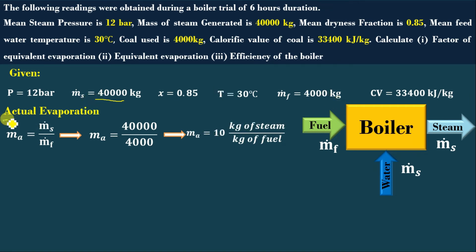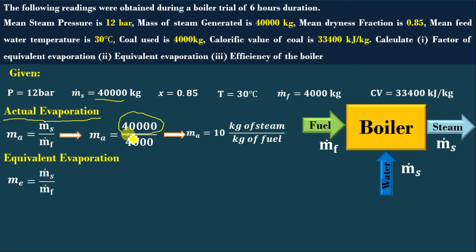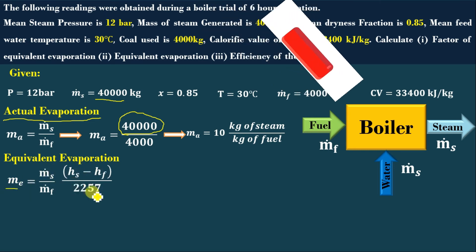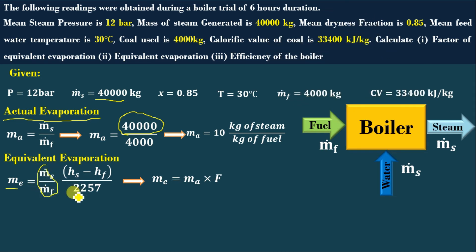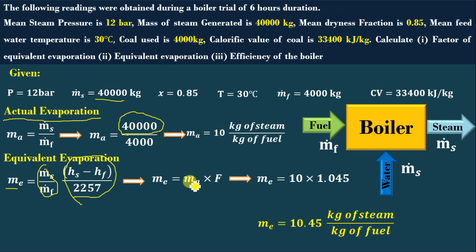As mentioned, actual evaporation alone does not give an effective comparison for the boiler because the outlet steam condition differs — it may be wet steam, dry steam, or superheated steam, and the MS value will vary accordingly. To find the equivalent evaporation Me, we take actual evaporation MA multiplied by the factor of evaporation F. Substituting: Me = 10 × 1.045 = 10.45 kg of steam per kg of fuel. You can see that equivalent evaporation is always greater than actual evaporation when the factor of evaporation exceeds 1.